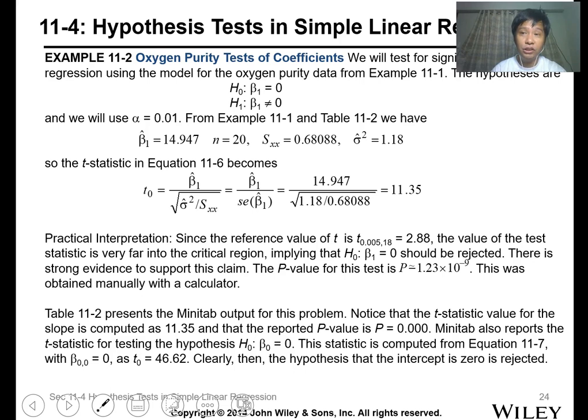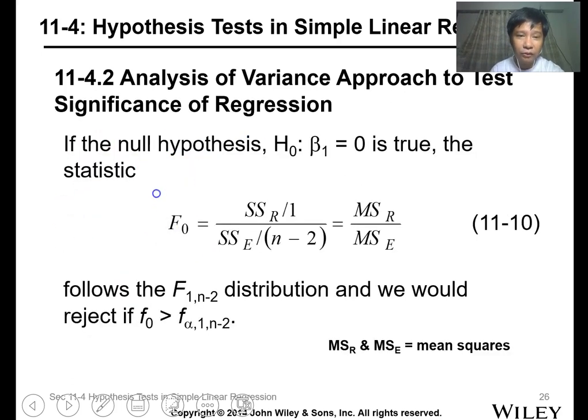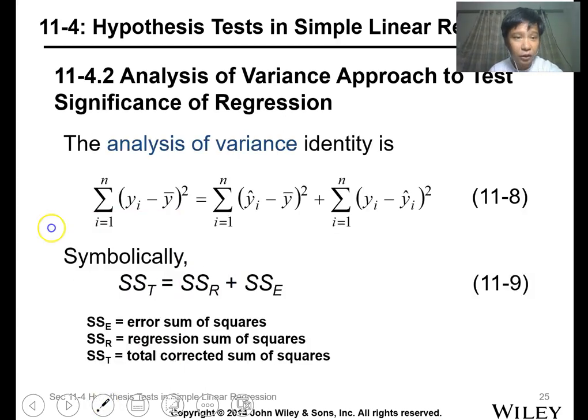From this calculation we see that this value is greater, so we'll reject the null hypothesis, meaning there is strong evidence that there's a linear regression. Let me check what our x variable is—the hydrocarbon level has a linear effect on the purity.